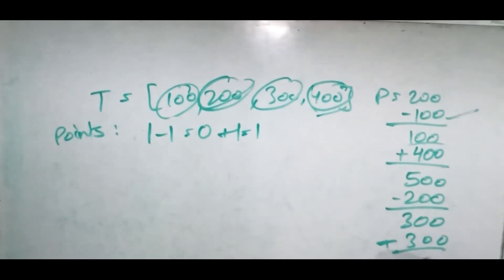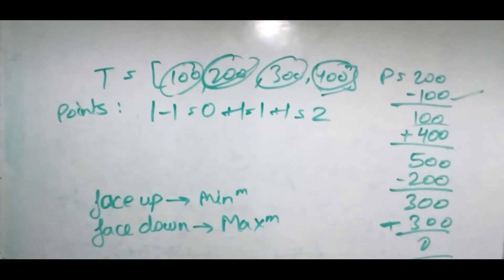Our power becomes zero and our points become two. So this is the most efficient approach. Whenever we want to use the face up approach, we should take the minimum value. And whenever we want to use the face down approach, we should take the maximum value.